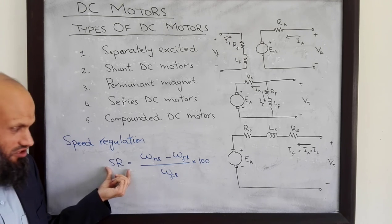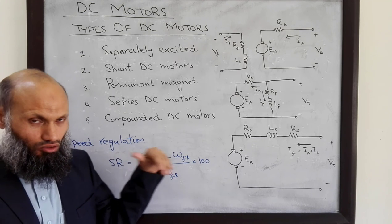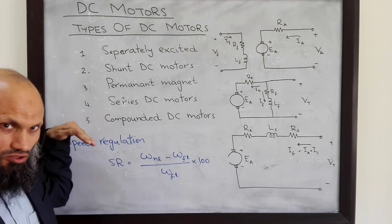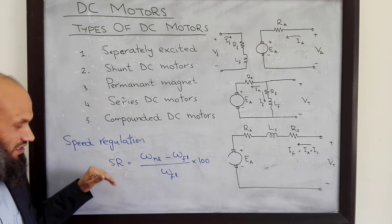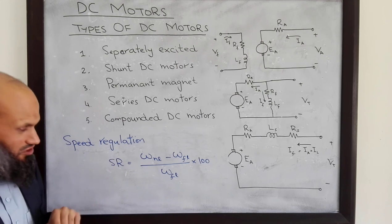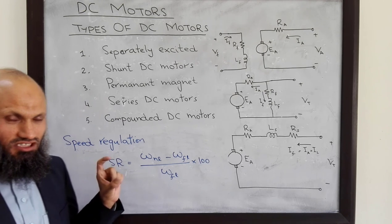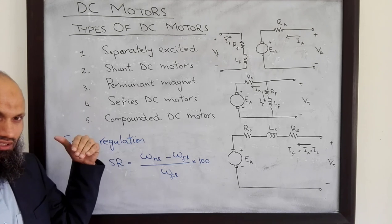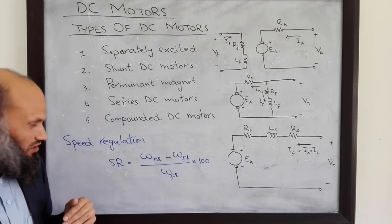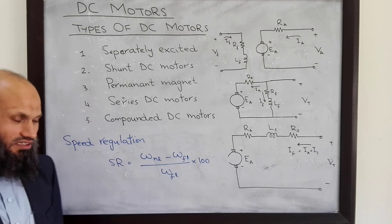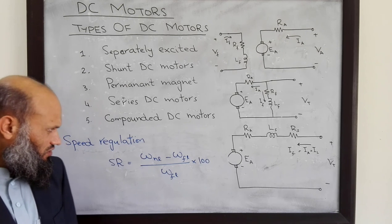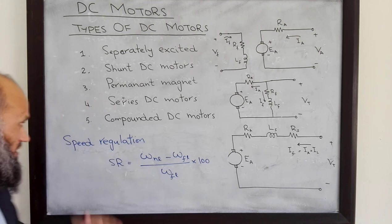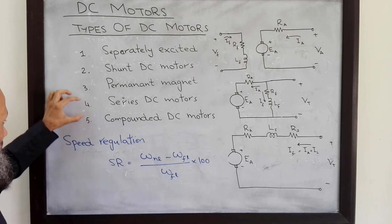Positive speed regulation means that if we increase the mechanical load connected to the motor, the speed of the motor will drop. Negative speed regulation means that if we increase the mechanical load connected to the shaft of the motor, its speed will actually increase — which is quite possible in certain types of DC motors, as we shall discuss when covering series and compounded DC motors.